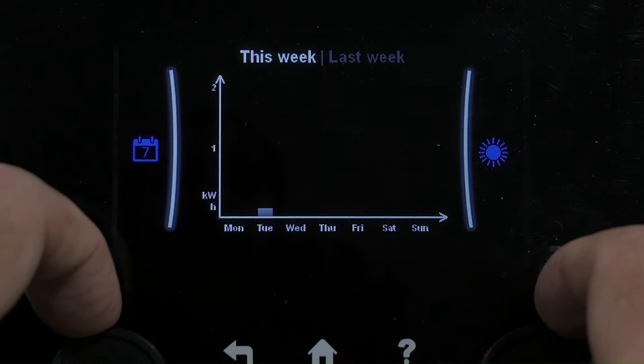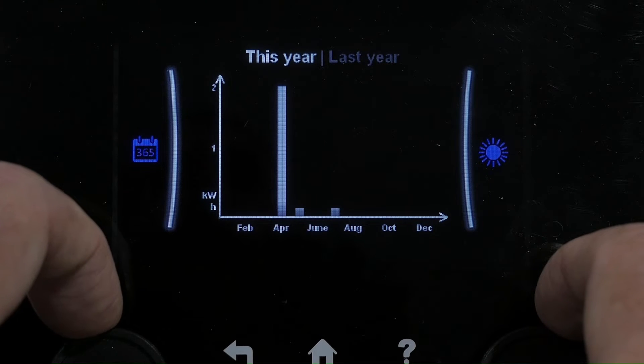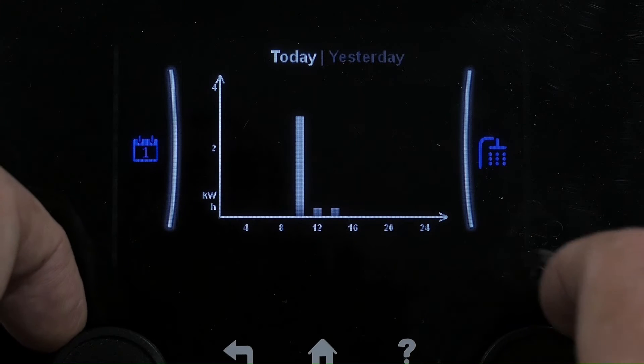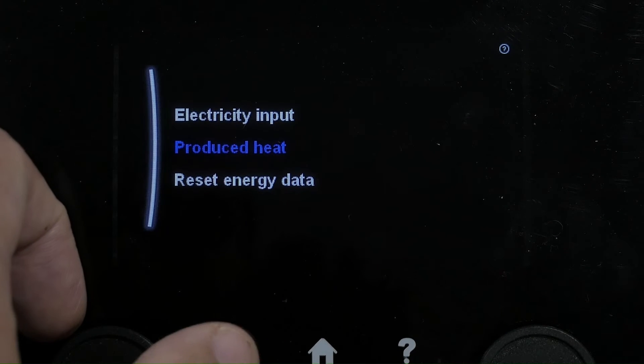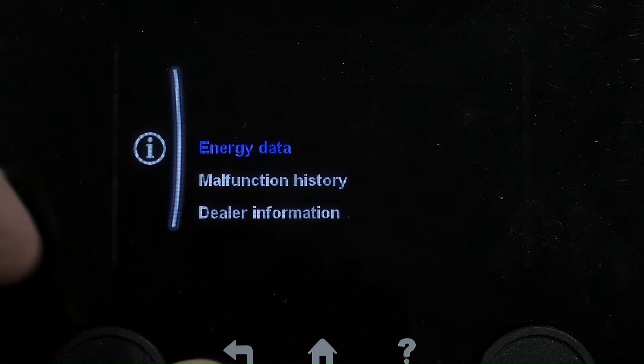Similar tables are available for this week and this year. We have very little data here because the unit is barely on in the training center, but it would be useful if you've got abnormal usage to see where the energy is being used.